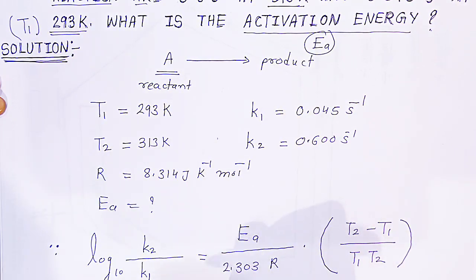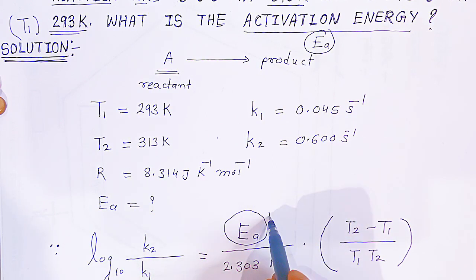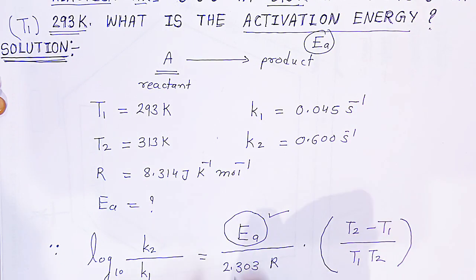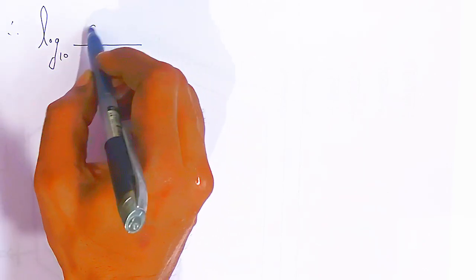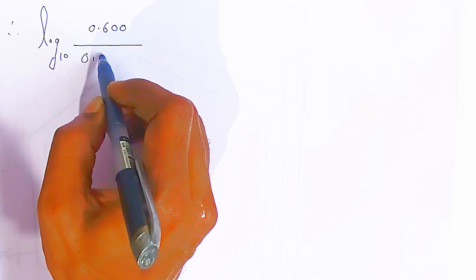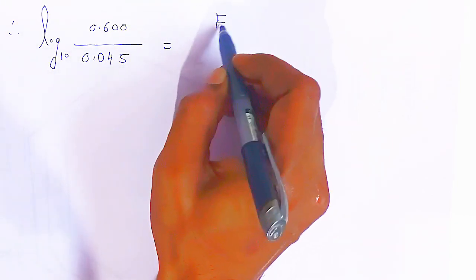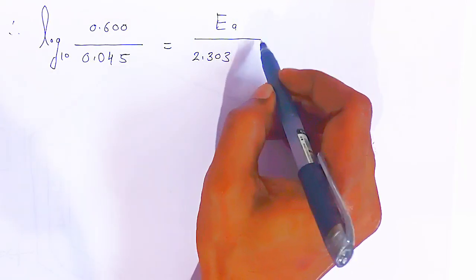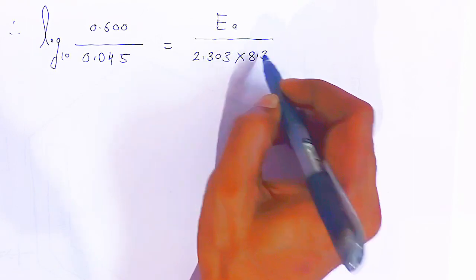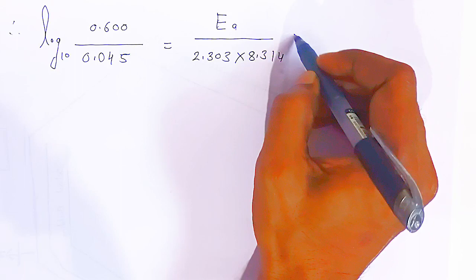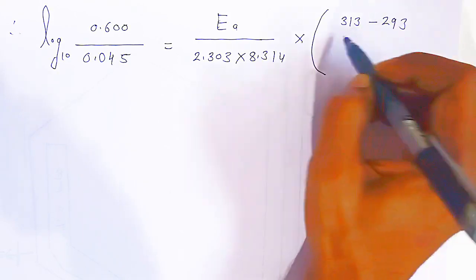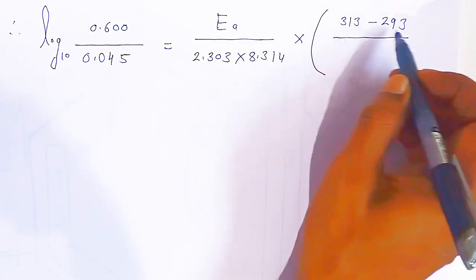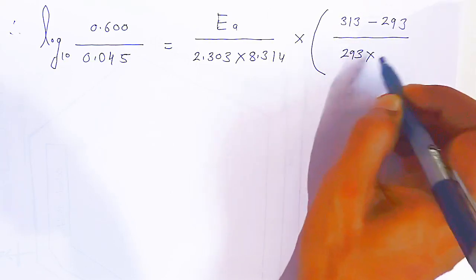Now we just put the values. Log base 10 of 0.600 divided by 0.045, which is equal to Ea upon 2.303 into R — the value of R is 8.314 — multiplied by 313 minus 293 in the numerator, divided by 293 into 313.